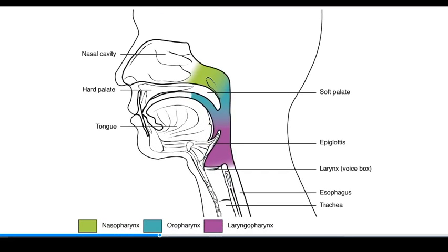To illustrate where the digestive tract overlaps with the respiratory tract, we can consider that the pharynx, or the throat, is separated into three different regions. There's the nasopharynx, next to the nasal cavity; the oropharynx, next to the oral cavity; and the laryngopharynx, next to the larynx. The oropharynx and the laryngopharynx are both part of the digestive tract, so they have to be lined with stratified squamous epithelium — the digestive epithelium — instead of the respiratory pseudostratified epithelium.